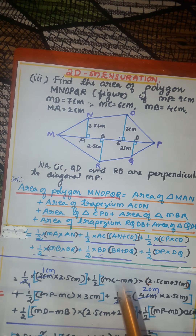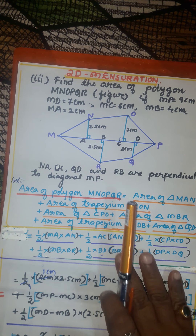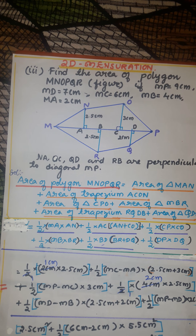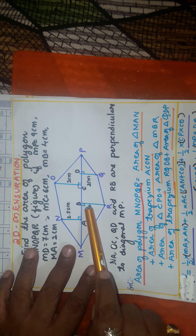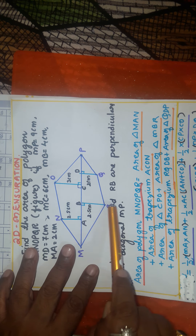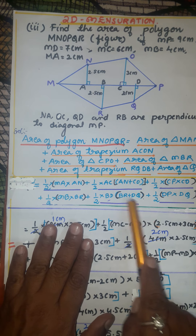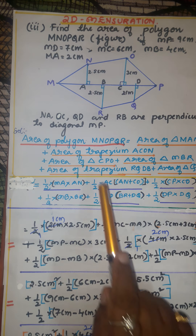Therefore, area of triangle MBR equals half into base MB into height BR. Area of triangle MBR is complete. Now we have trapezium RQDB. The formula for area of a trapezium is half into height into sum of the parallel sides. In trapezium RQDB, BD is the height and QD and RB are the parallel sides. Therefore, area of trapezium RQDB equals half into BD into BR plus DQ.